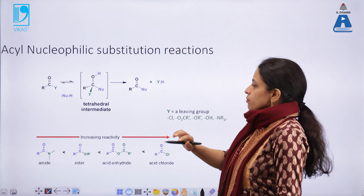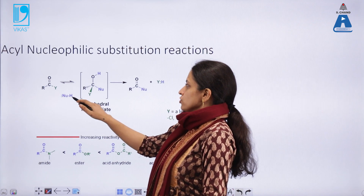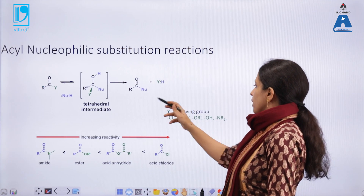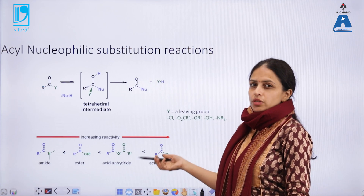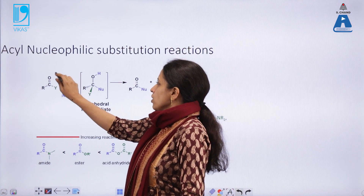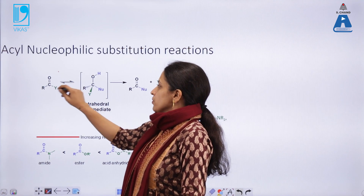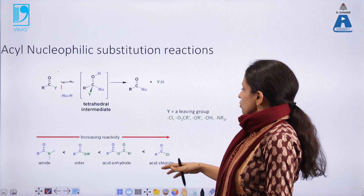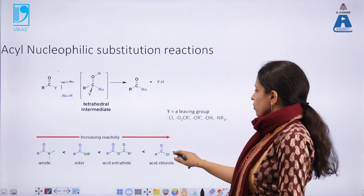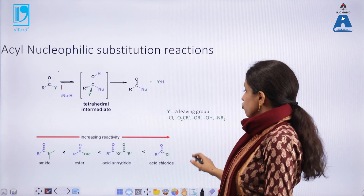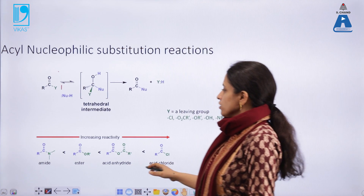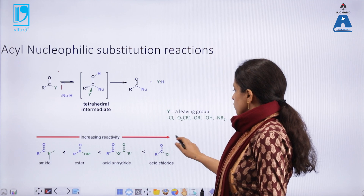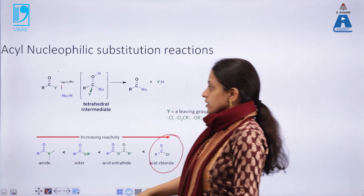The third kind of substitution reaction occurs in acyl compounds, where the leaving group Y departs in the presence of a nucleophile via a tetrahedral intermediate to give a substituted acyl compound. The most common example is the benzoylation reaction between benzoyl chloride and aniline — benzoyl chloride is the substrate, aniline is the nucleophile, and the product is benzanilide (N-phenyl benzamide). The most reactive acyl compounds are acid chlorides, since chloride is the leaving group — the conjugate base of the strong acid HCl. As you move towards amides, the leaving group becomes poorer. Acid chlorides are the most reactive but can be violent in certain cases.